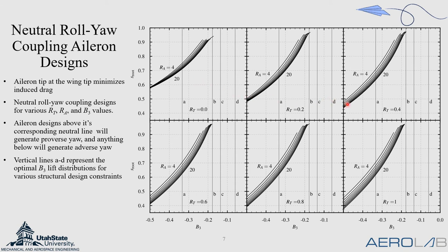So for example, if we had a planform with a taper ratio of 0.4, aspect ratio of 20, and a lift distribution of negative one-third, we would want an aileron root at approximately 63% of the semi-span, and that would give neutral roll-yaw coupling. Anything inboard of that would give adverse yaw, anything outboard would give proverse yaw. The vertical lines on these plots show the optimal lift distributions shown previously.